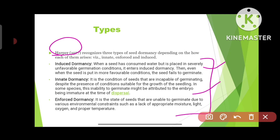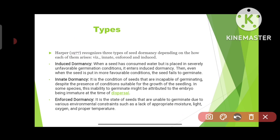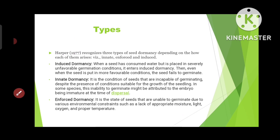The next type is enforced dormancy — the name indicates its meaning. Seeds are unable to germinate due to various environmental constraints such as lack of appropriate moisture, light, oxygen, and proper temperature. We are essentially enforcing that dormancy. These were the three types: induced, innate, and enforced.